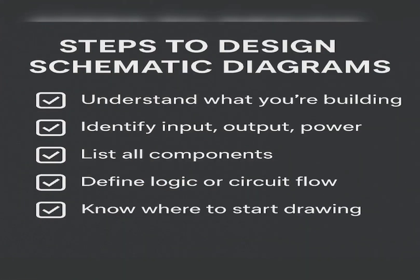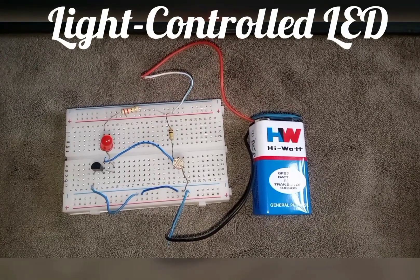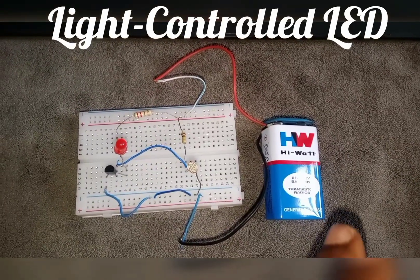Before we start, here are the steps we need to follow when designing any schematic diagram. First is to understand what project we are building. Second is to identify the input, output, and the power driving the project. Third is to list out all the components by writing out all their symbols. Fourth is to define the logic or circuit flow, and lastly, to know where to start drawing the schematic diagram of any electronics project.